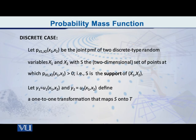Let p of the random variables X1, X2 at the point small x1, small x2 represent the joint PMF, the joint probability mass function of two discrete random variables X1 and X2, with the set of points denoted by S, which is the support of X1, X2, being that set of points where these probabilities are positive, greater than 0.